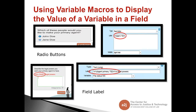The third way to use Variable Macros is to display the value of a variable in a field. There are two options: radio buttons or field label. Here I've used radio buttons — this is the question about which person do you want to make your primary agent? Agent 2 TE is in the variable macro format so that it displays their name, what they've selected before. You can also use it for a field label — John Smith was selected as the Agent Primary TE for their legal powers, so that the end user can remember who they're specifically talking about.